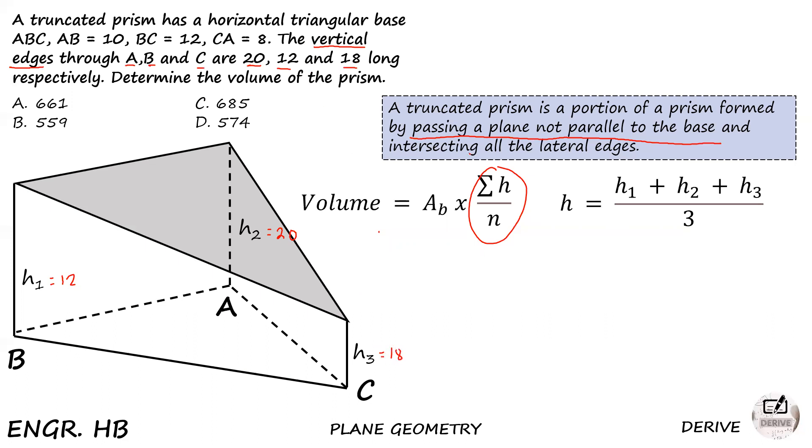Once you're familiar with this situation, you don't need to identify which is H1, H2, or H3 since three values are given - just average them. In this case, H equals 12 plus 20 plus 18 divided by 3, which equals 50 over 3. We'll leave it in fraction form.